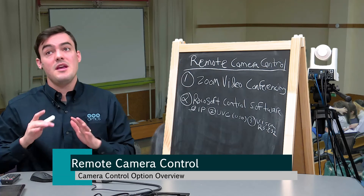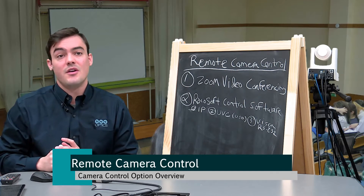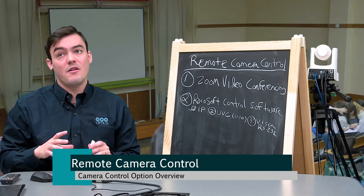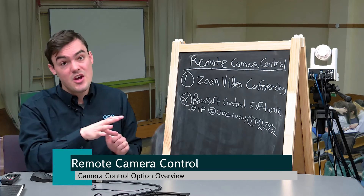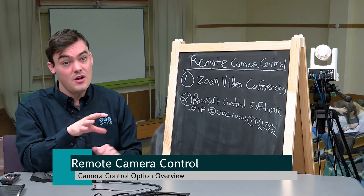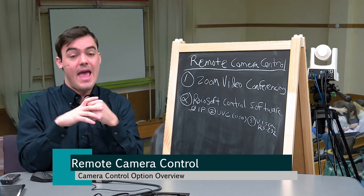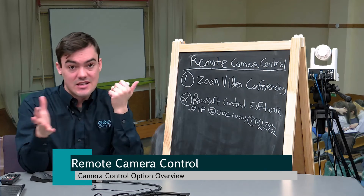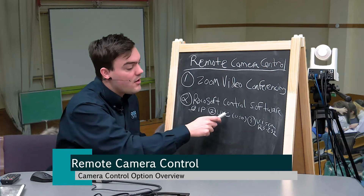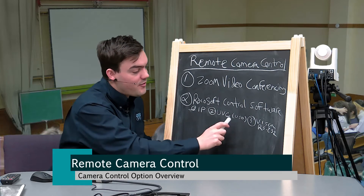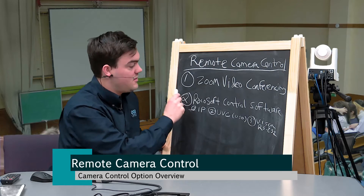Those are the three main control options within Rokosoft. It's a control software that requires a Windows computer to be on the network and connected to the cameras in some way — whether over a network port, a USB cable, or an RS232 cable.